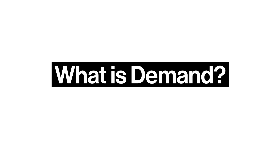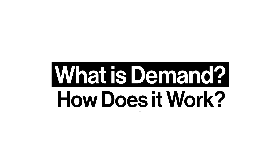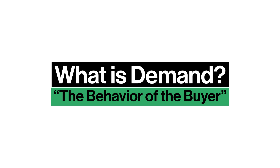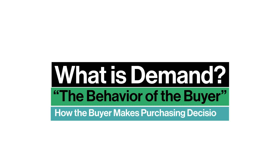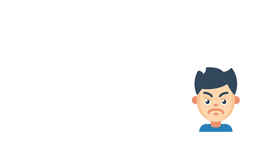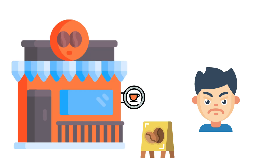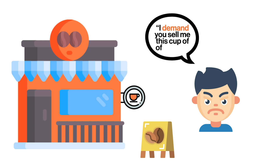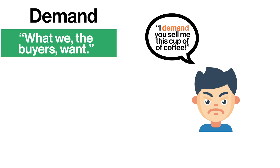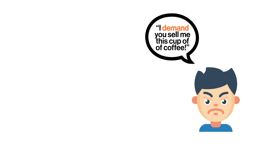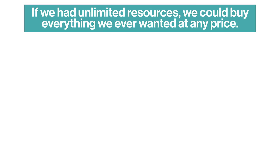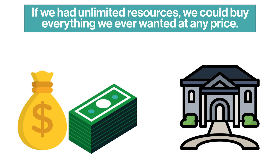So what is demand and how does it work? Demand is the behavior of the buyer — it's how the buyer makes purchasing decisions. Just picture an angry customer waiting in line for their morning coffee saying 'I demand you sell me this cup of coffee.' Demand is all about what we the buyers want. If we had unlimited resources we could buy everything we ever wanted at any price, but in reality each person has limited resources and we have to choose between buying one item over another.